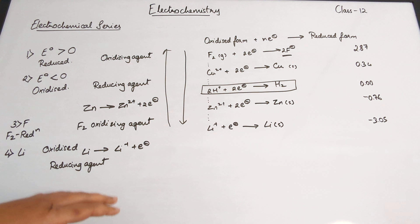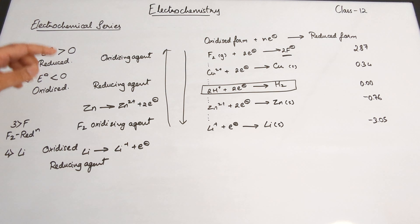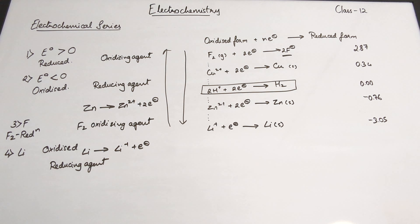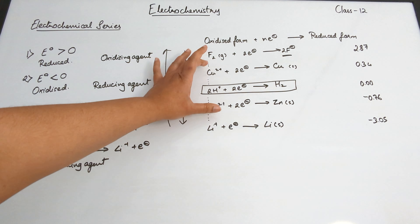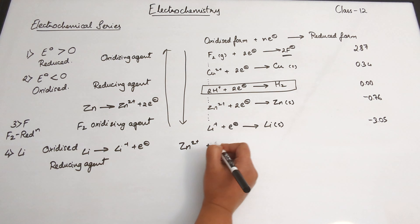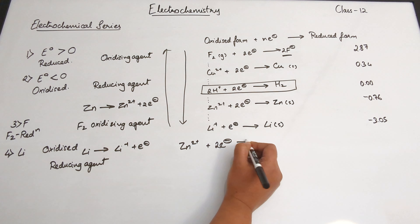What's happening with lithium is similar to zinc — this reduction reaction is not preferred because of the minus 3.05. It finds the oxidized form more stable, so lithium has a very high tendency to undergo oxidation and gets oxidized.